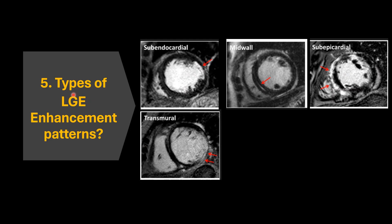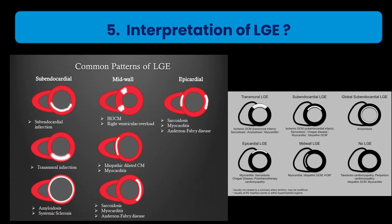Coming to types of enhancement: subendocardial enhancement involves the inner layer; transmural involves the entire thickness of the left ventricular myocardium; mid-wall enhancement is where the endocardial and epicardial parts are normal and only the middle is involved; subepicardial enhancement involves the epicardial aspect of the myocardium.